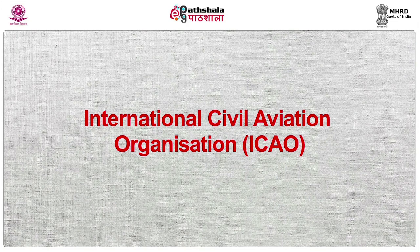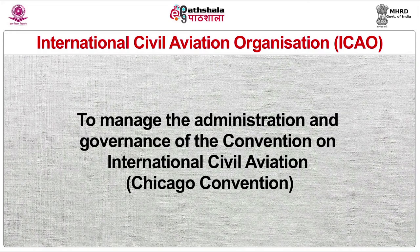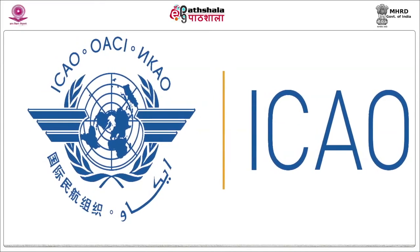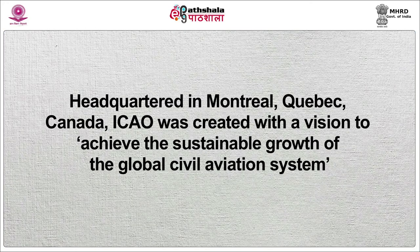Let us now discuss the International Civil Aviation Organization, abbreviated as ICAO. ICAO is a specialized agency of the United Nations established by states in 1944 to manage the administration and governance of the Convention on International Civil Aviation, also known as the Chicago Convention. It was established to codify the principles and techniques of international air navigation. Headquartered in Montreal, Canada, ICAO was created with the vision to achieve sustainable growth of the global civil aviation system.